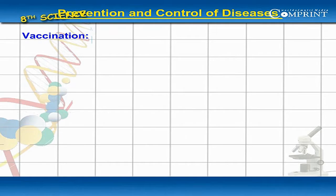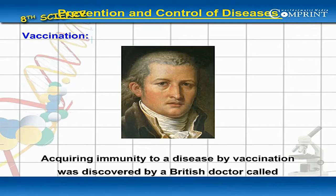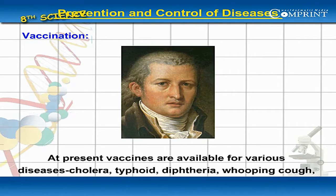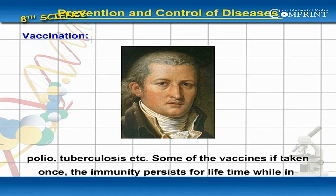Vaccination: Acquiring immunity to a disease by vaccination was discovered by a British doctor called Edward Jenner in the year 1776. At present, vaccines are available for diseases like cholera, typhoid, diphtheria, whooping cough, polio, tuberculosis, etc.